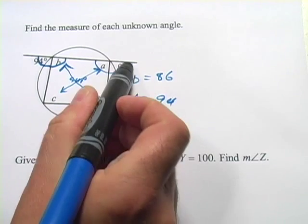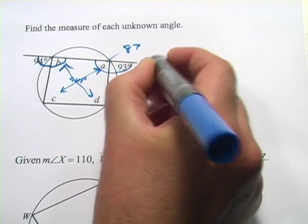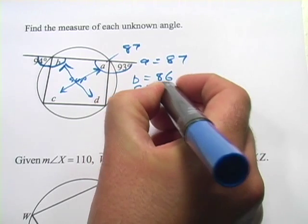Over here, a linear pair again. So 93, that means A is going to equal 87. And then supplementary down to C, C is going to equal 93.